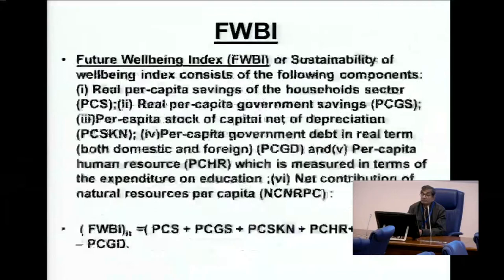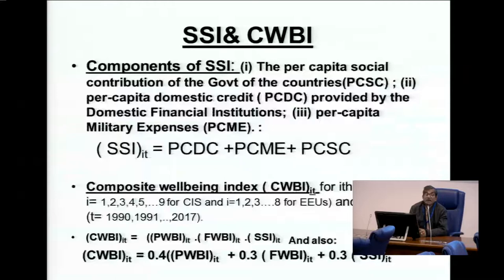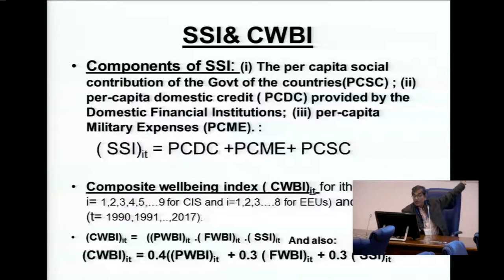From the sum of these, we have deducted per capita government debt in the case of future well-being. The social security index consists of per capita domestic credit provided by domestic financial institutions, per capita military expenses, and per capita social contributions of the government. Thus, the composite well-being is calculated by two methods: the GM method and the weighted arithmetic method.